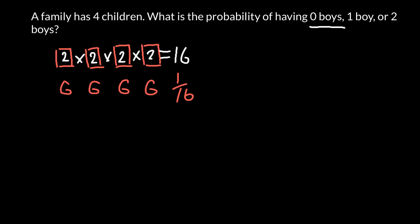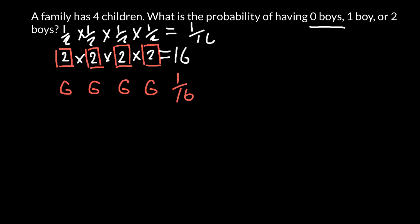So we can say that the probability of zero boys would be one sixteenth. In other words, what is the probability that the first child would be a girl? This is one half — it can be either a boy or a girl. Then the second child a girl, third child a girl, and fourth child a girl. Each time it's going to be one half probability, so we get the same one sixteenth.